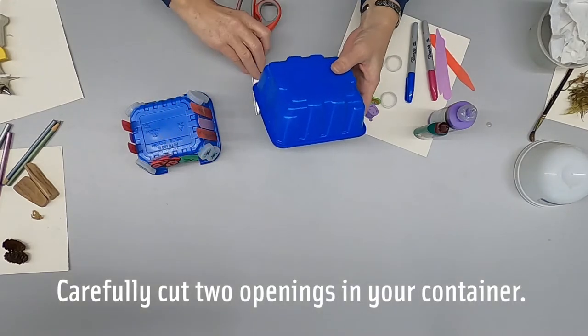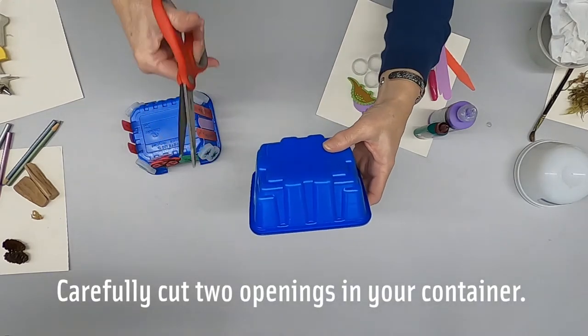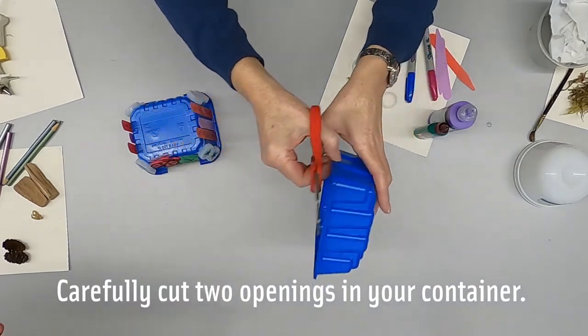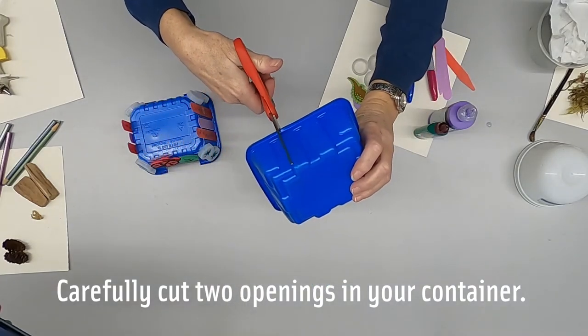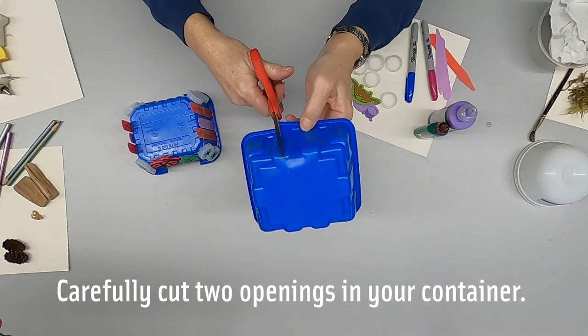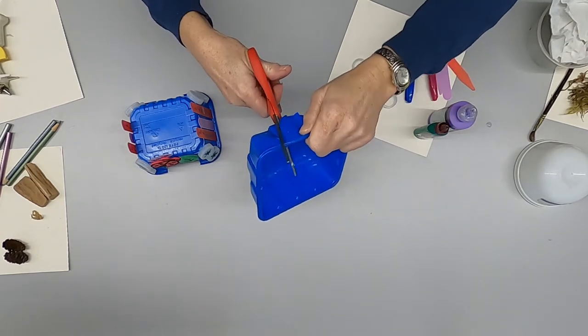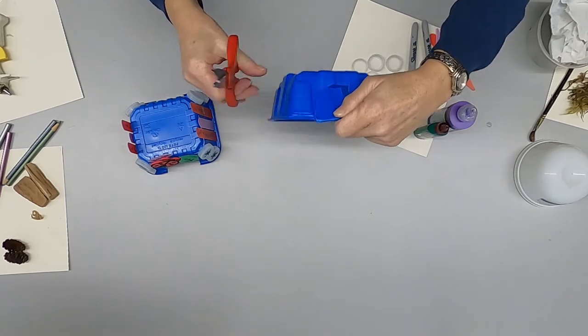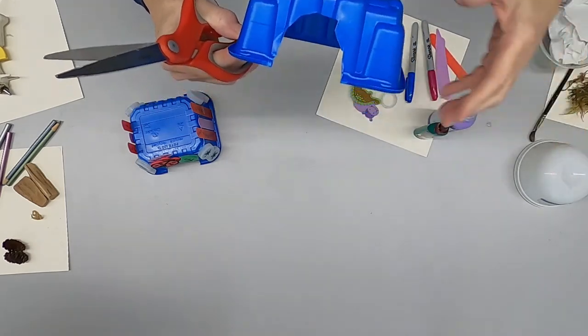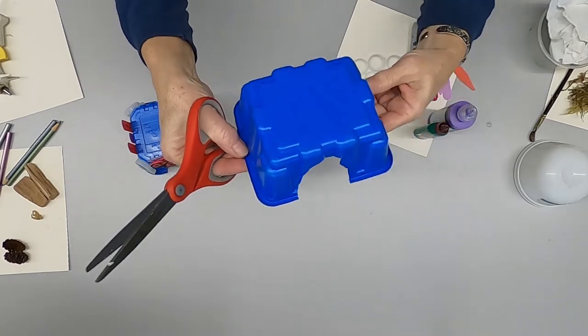First thing we're going to do is use some scissors or a sharp knife and cut our doorways. You want to cut two doorways, a front door and a back door. Just in case a snake decides to visit your toad, the toad will want to have a back door to make its escape.